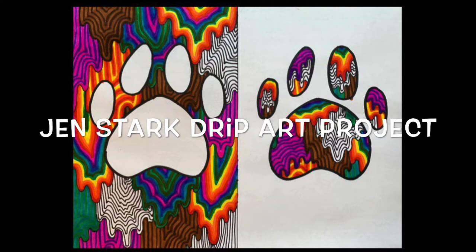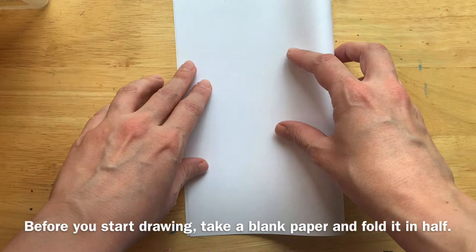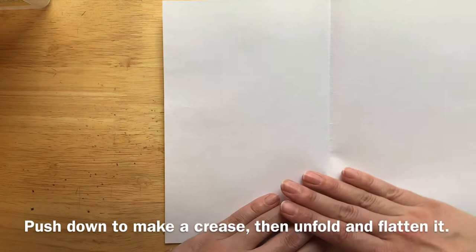Today you are going to create an artwork based on artist Jen Stark and her drip designs. With a blank sheet of paper, prepare by folding it in half, creating a crease in the middle of the paper, then unfold and flatten out the piece of paper.